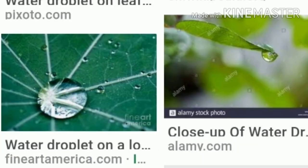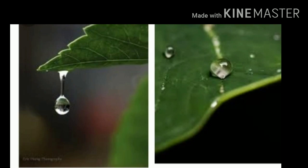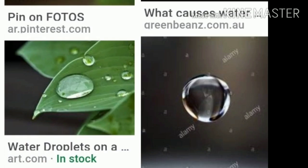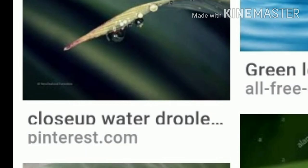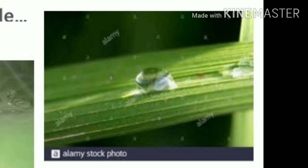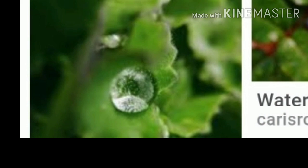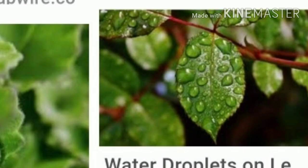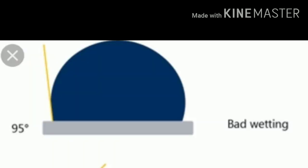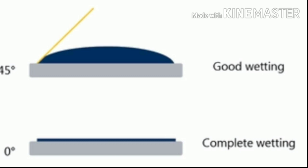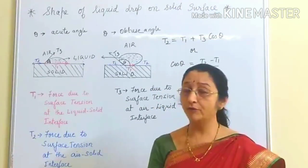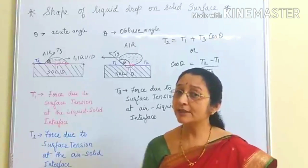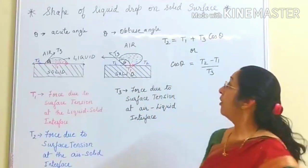In the pictures we can see drops of various sizes and shapes formed on different types of leaves. When a small amount of liquid is dropped on a plain solid surface, the liquid will either spread on the surface or form droplets. Which phenomenon occurs depends on the surface tension of the liquid and the angle of contact between the liquid and the solid surface. We are now going to discuss the shape of a liquid drop on a solid surface.